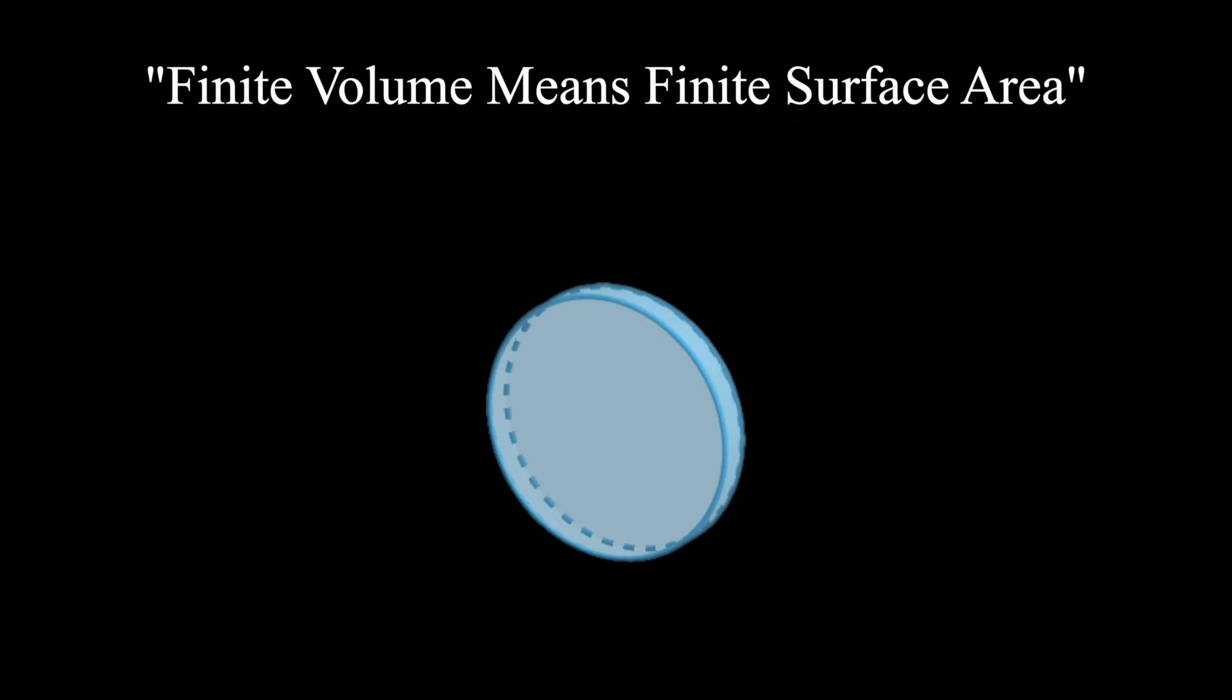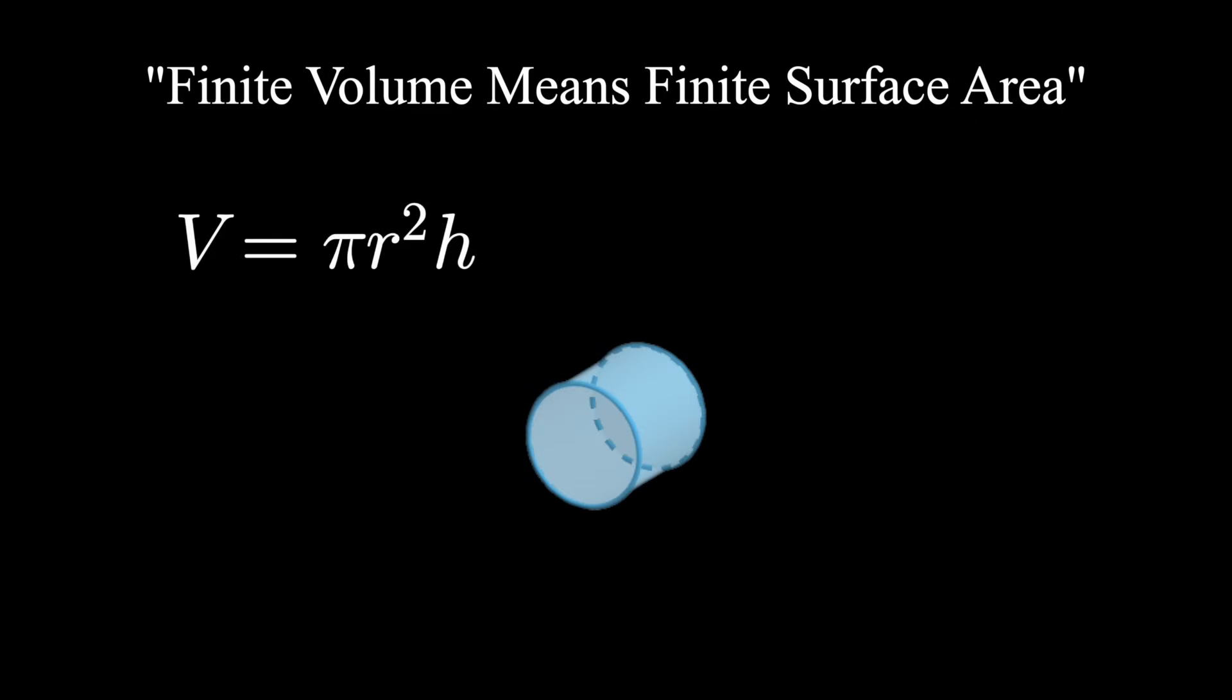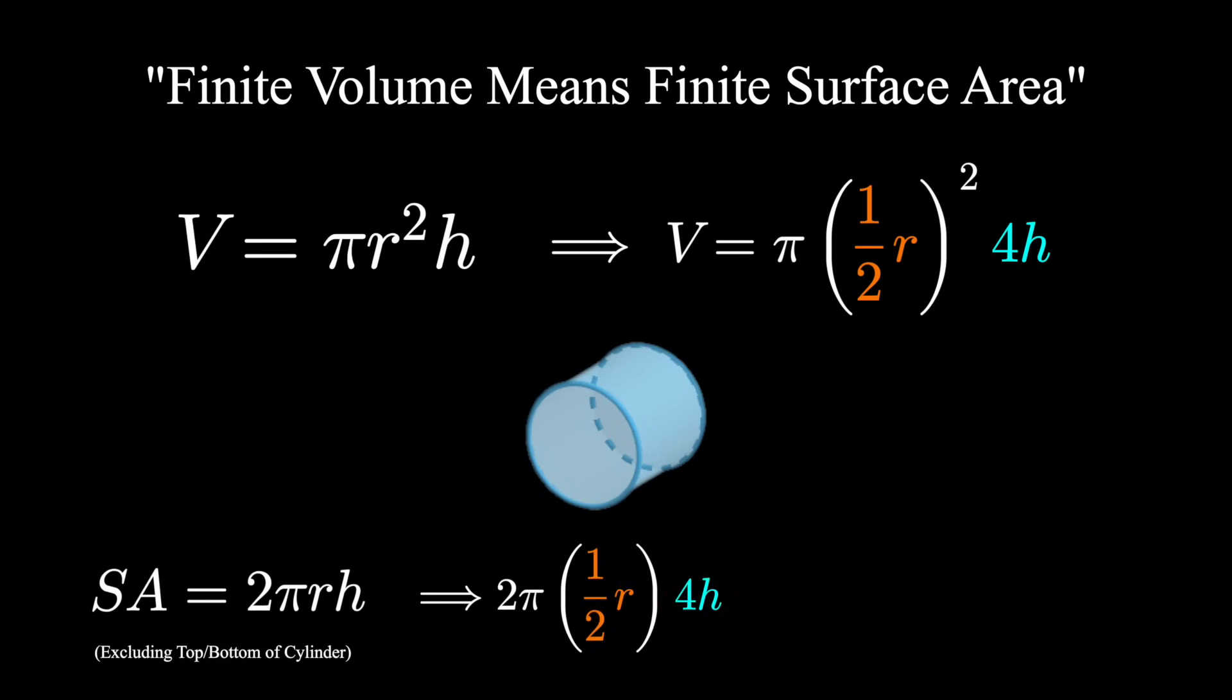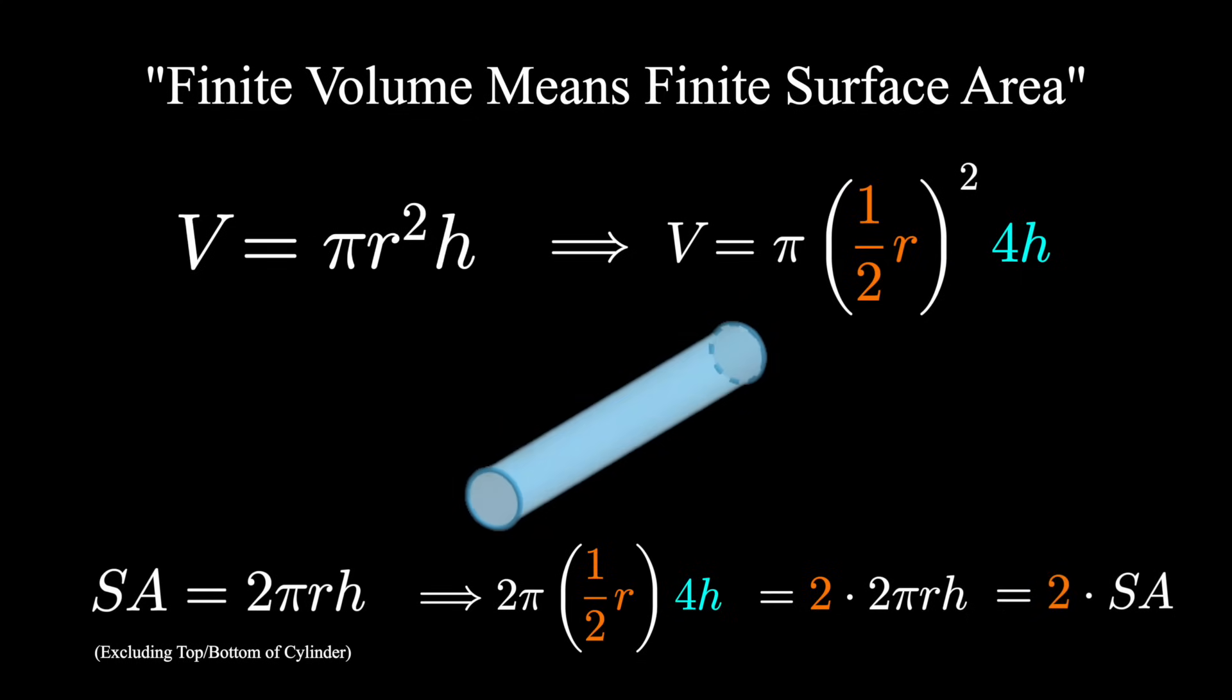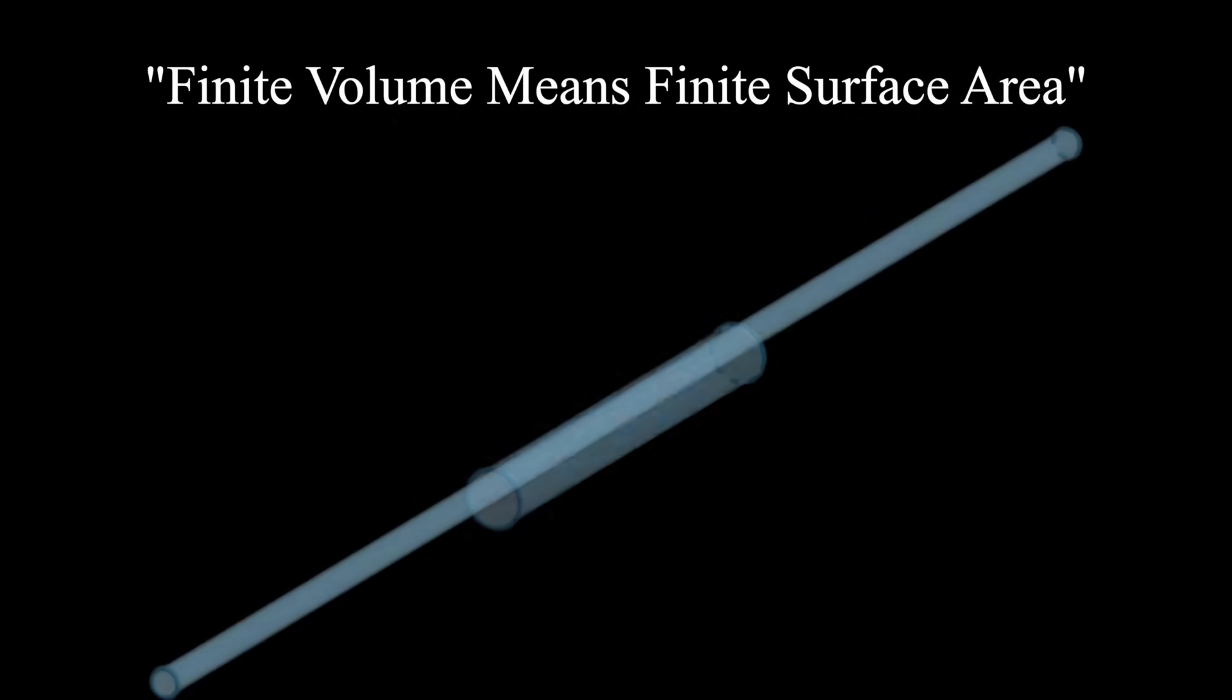You can sort of intuitively justify this to yourself by taking a cylinder of clay. If you roll the clay up so it has half the diameter it did, you still have the same amount of clay, the same amount of volume. But then it would be four times as long, and hence twice the surface area. And if you were somehow able to continue this process ad infinitum, the volume would remain constant, while the surface area would grow arbitrarily large.